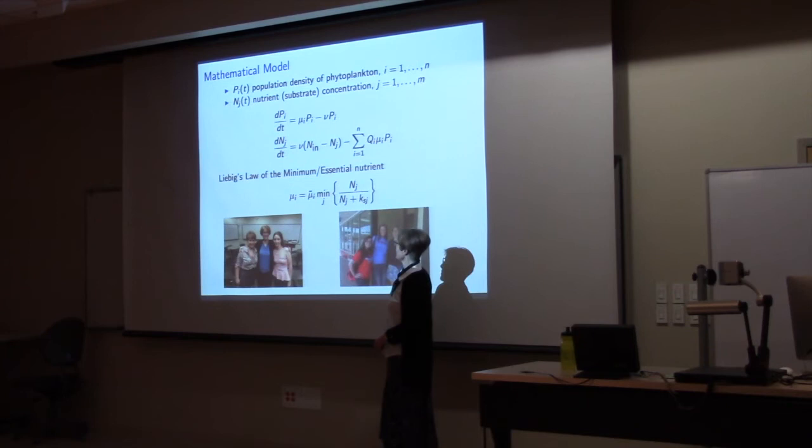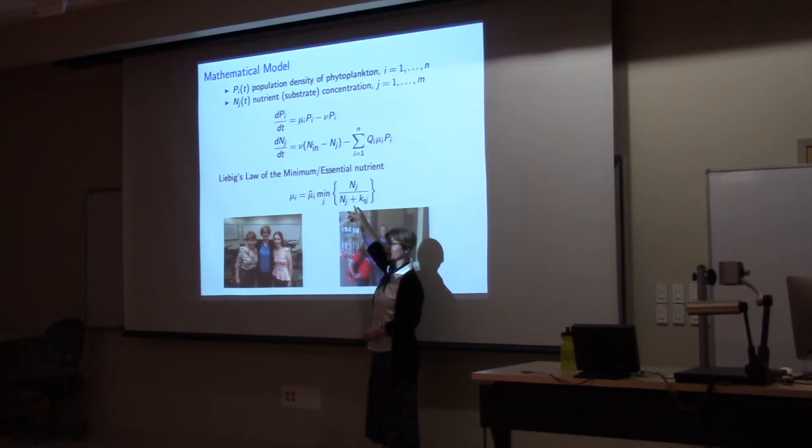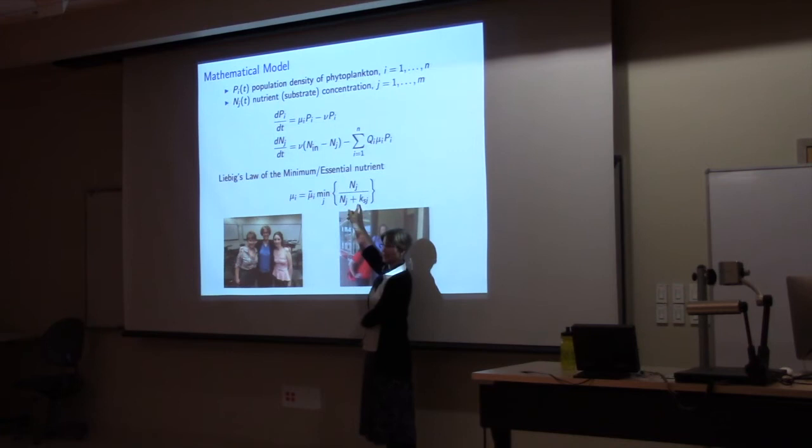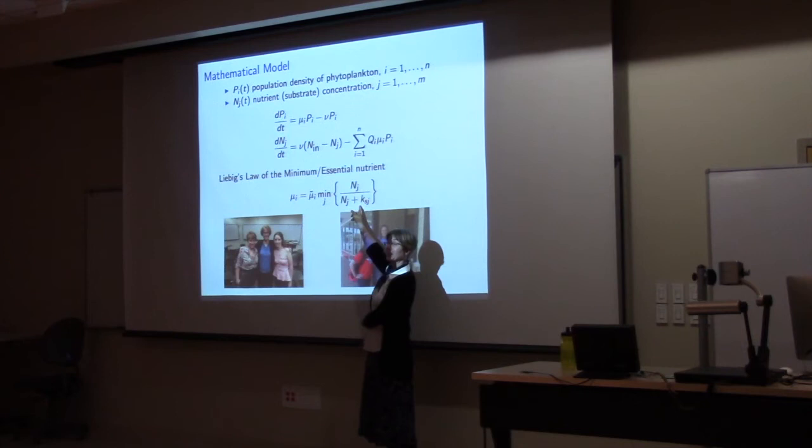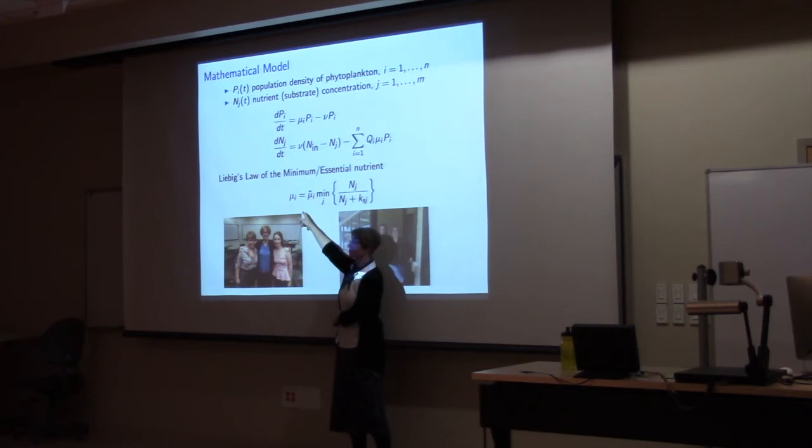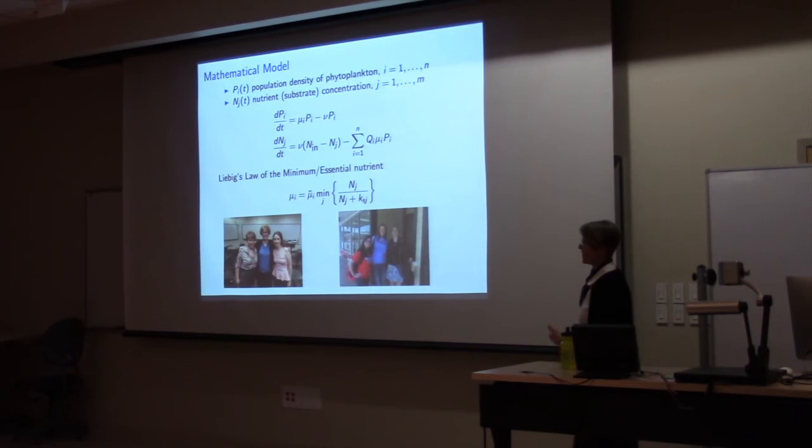And for my students, my math students right at the front, this guy is called a half saturation coefficient. Can you tell me why? I'm not going to quiz you on this. So let's imagine that N is equal to this K, right? If N is equal to this K, I have K over K plus K. What's that going to be equal to, guys? That would be a half. So this is called a half saturation because it tells us when the growth rate is a half of its maximum. Isn't that cool? Okay, I'm geeking out here.